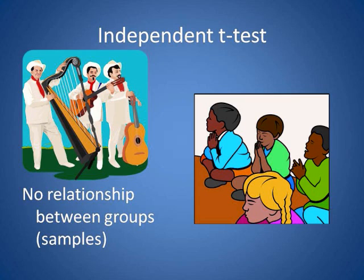Examples of when an independent t-test would be appropriate: experimental versus control groups; males versus females, assuming we're not talking about husbands and wives; students at University X versus students at University Y. Yes, they're both university students, but they're coming from two different populations. There's no relationship between these two groups.